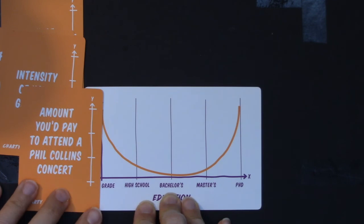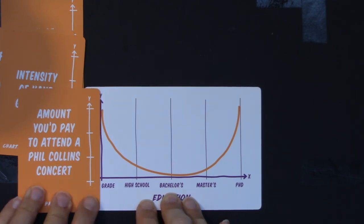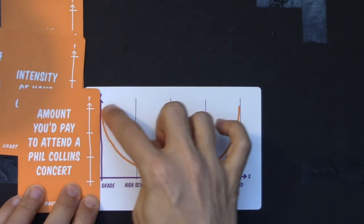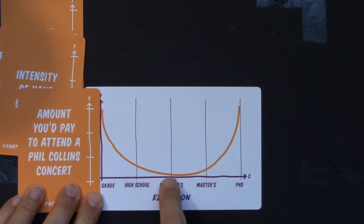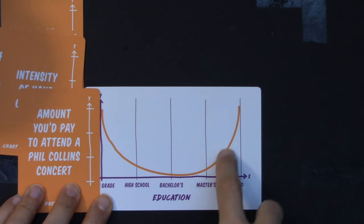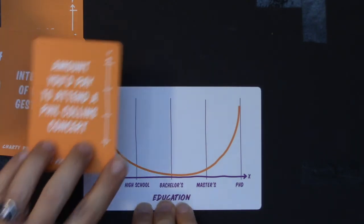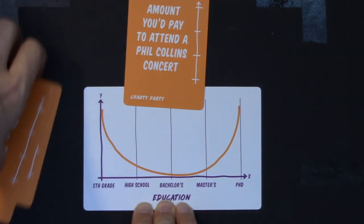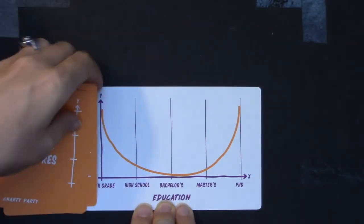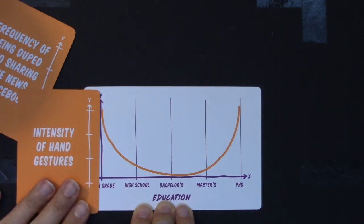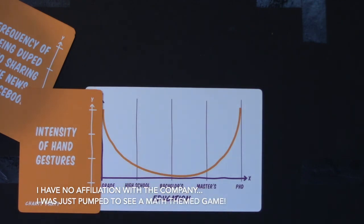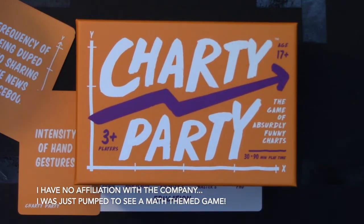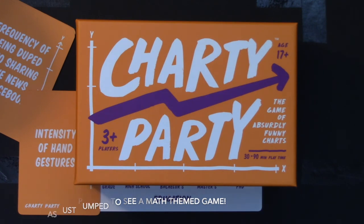Amount you'd pay to attend a Phil Collins concert — I don't think a fifth grader would be really willing to spend a lot of money to go to a Phil Collins concert. I could see a high schooler wanting to spend less and a bachelor's even less, but I don't know why getting more educated would make you really want to attend Phil Collins concerts. So in general I don't think any of our four really applied to this U-graph, but if I had to pick one — and that's how the game works — I'd go with intensity of hand gestures. If you ever want to buy Charty Party, check it out on the website. It's a fun game — I've played it at game nights. Thanks so much everyone, bye!